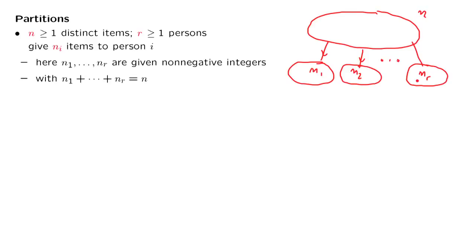These numbers, n1, n2, up to nr, are given to us—how many items each person should get. And these numbers must add to n, so that every item in the original set is given to some person.